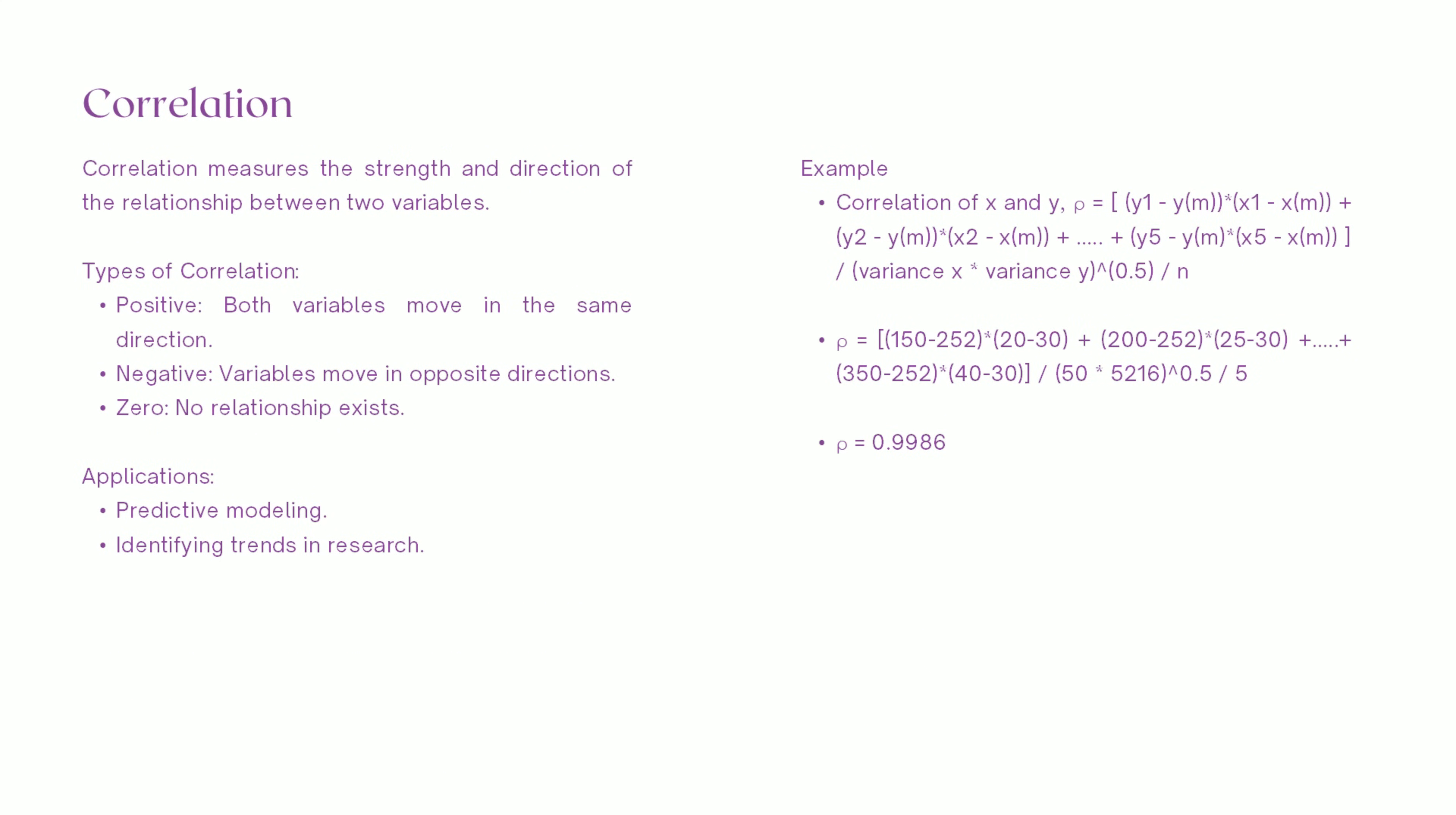Finally, let's discuss correlation. Correlation measures the strength and direction of the relationship between two variables. In our example of temperature and ice cream sales, the correlation is 0.9986, indicating a very strong positive correlation.